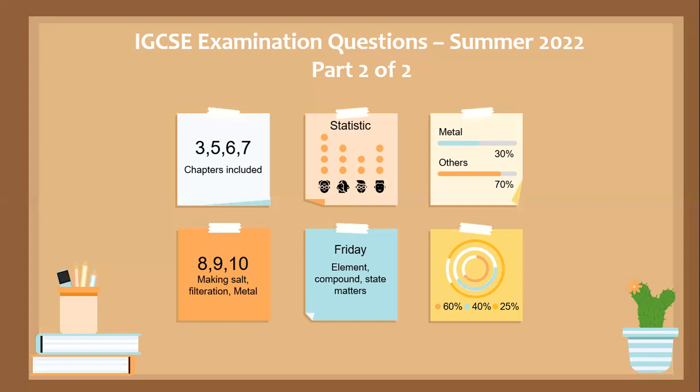it indicates that the total number of medical questions is about 30% and the rest will come from others. Most of the questions are from chapters 3, 5, 6, 7, 8, 9, and 10, including making self-filtration. Without further ado, let's get started.